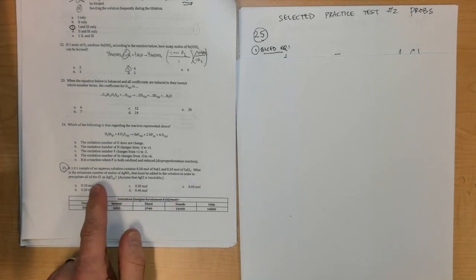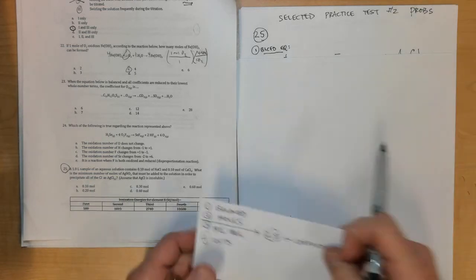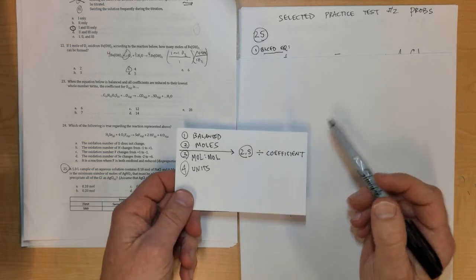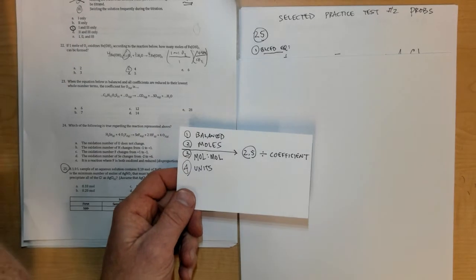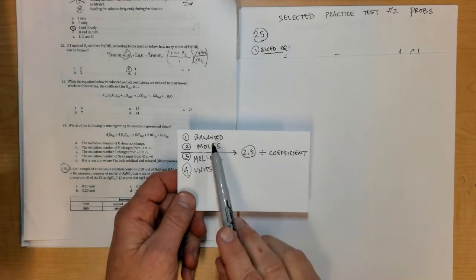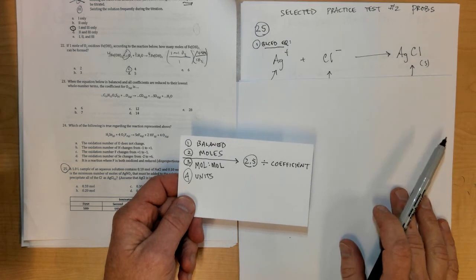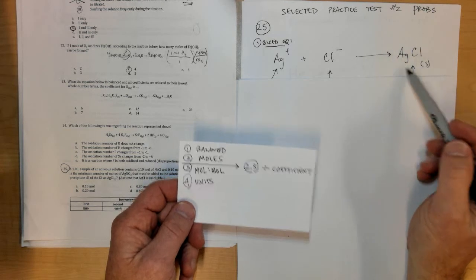This is a classic type of stoichiometry problem where if you follow the steps of stoichiometry you can be quite successful. Step number one is to write the balanced chemical equation, and the balanced chemical equation has to involve the goal that we're looking for, and that's AgCl solid because that's what it says we're going to precipitate.